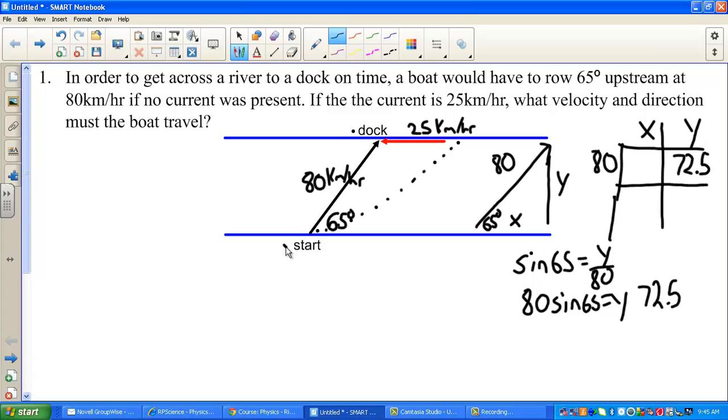Next I want to find out the X component which is right here. That will be cosine 65 equals X over 80. Math is very similar. Punching this in the calculator. And that comes out to be 33.8.